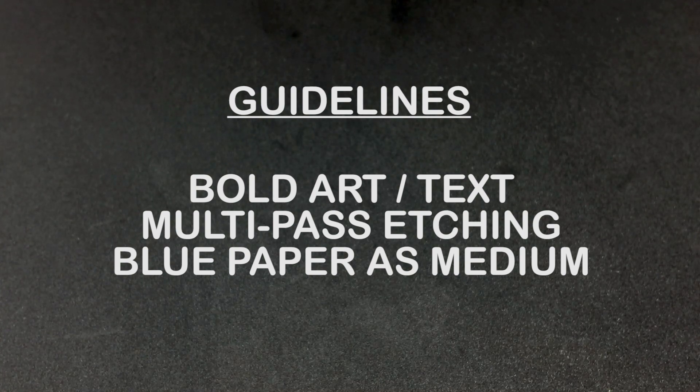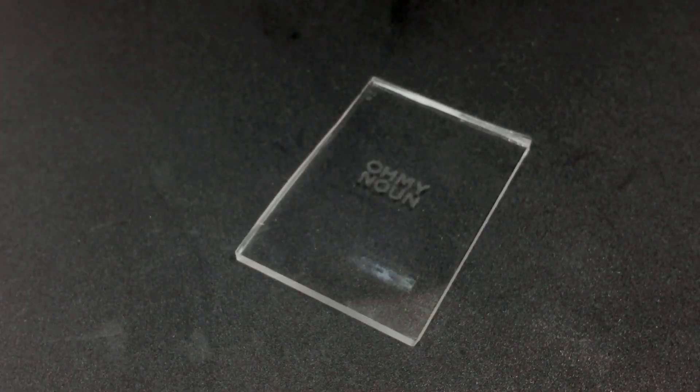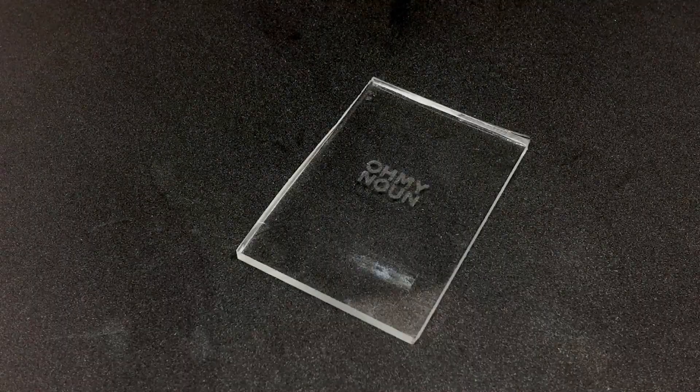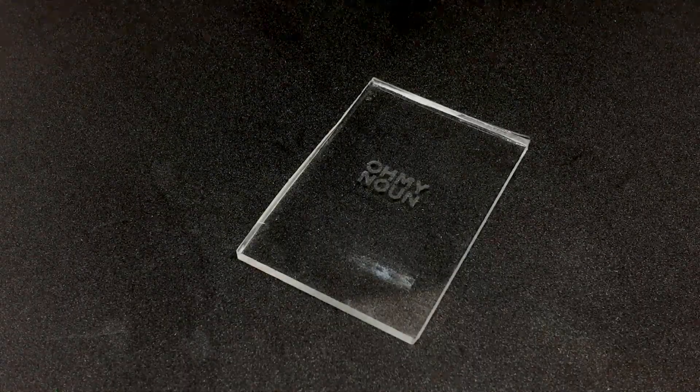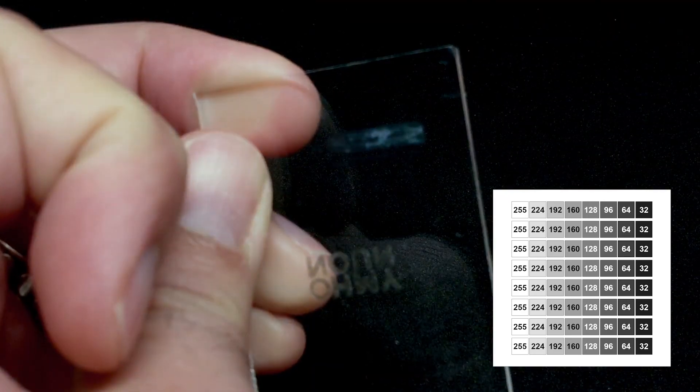And then I tried one more Oh My Noun custom made for etching acrylic. I etched this with three passes and came out with a great result. This flaw on the back side was from trying to etch my calibration graphic. Even it didn't work.